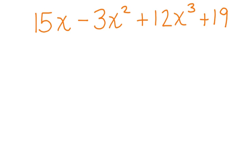Here's another one that's out of order: 15x minus 3x squared plus 12x cubed plus 19. Let's take the largest one first. We have a positive 12x cubed. That's our first term.